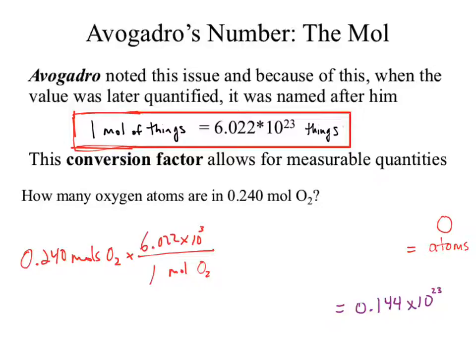Now what happened to the units? Moles O2 disappear. What would the unit now be? There's nothing written there, which means no unit — which then means you don't have your answer.